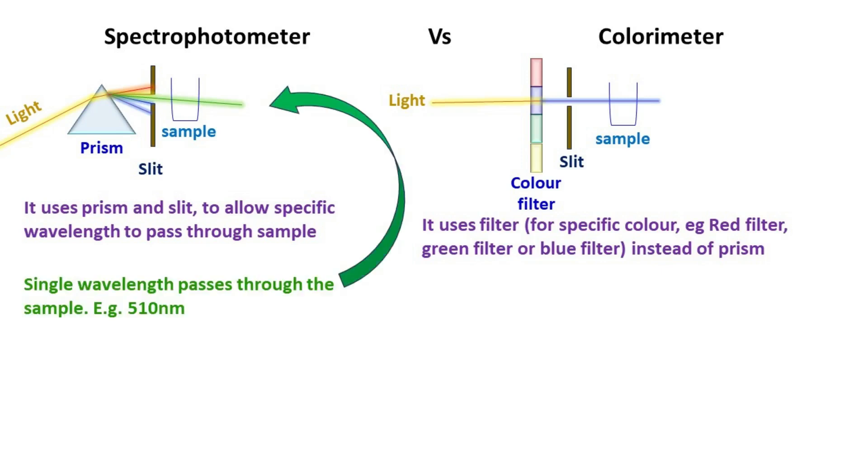In spectrophotometer, a single wavelength is allowed to pass through the sample. Whereas in colorimeter, a range of wavelength is allowed to pass through the sample.